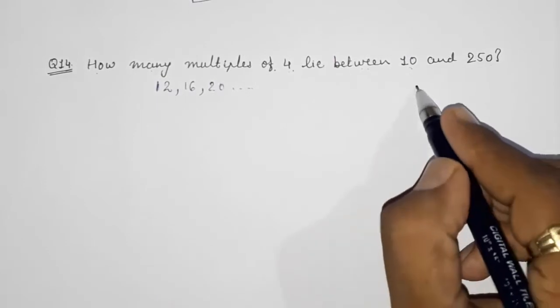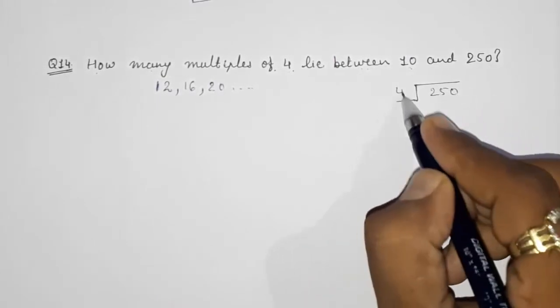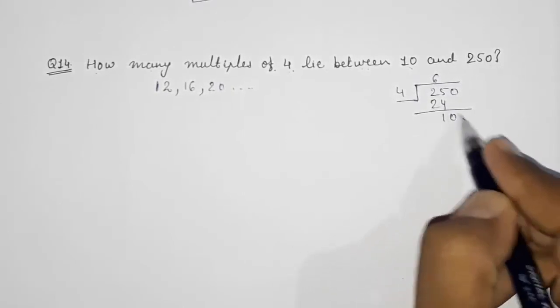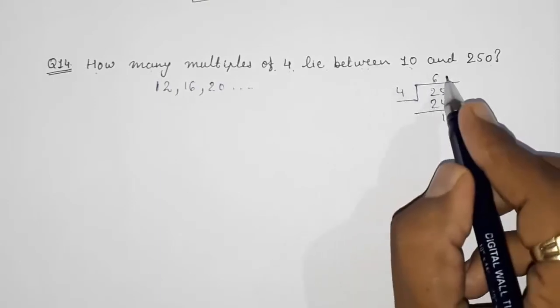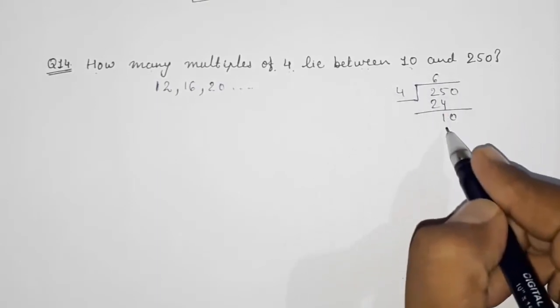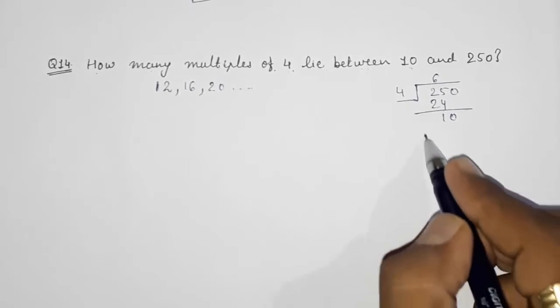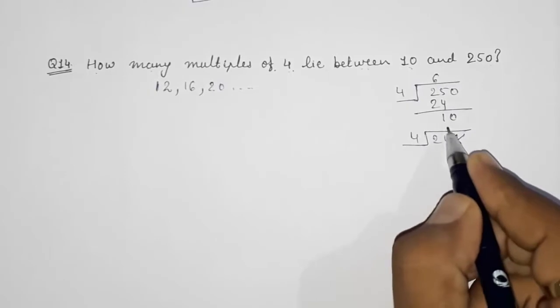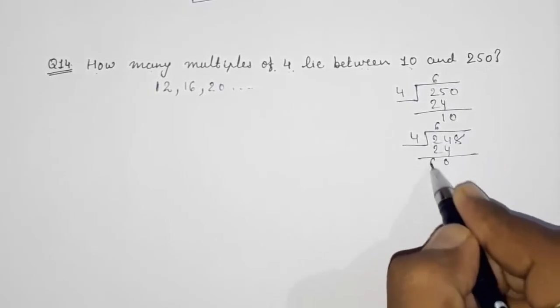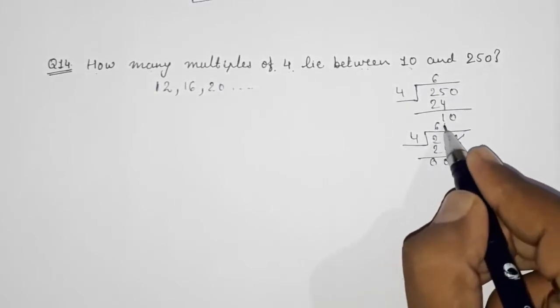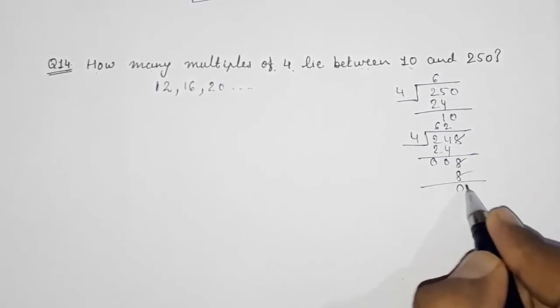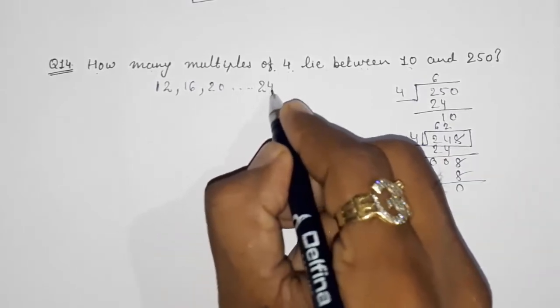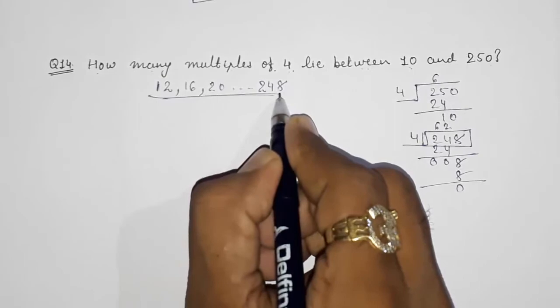Again I am going to do the same thing. 250 divided by 4, 6 are 24, and it's 10. Instead of 10, if I would have got here 8, it would be perfectly divisible by 4. So instead of 250, if I will take 248. So 4 sixes are 24, and this 8 will come here, 4 twos are 8, and here 0. So our last number that is divisible by 4 is 248.